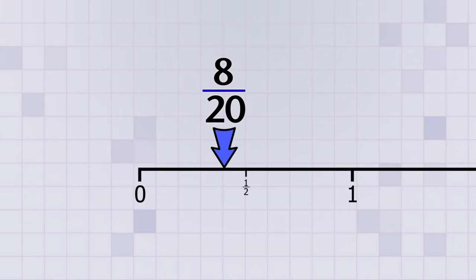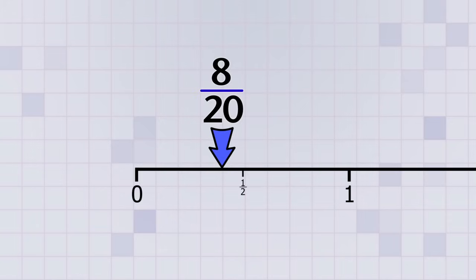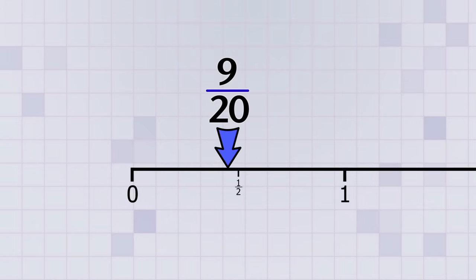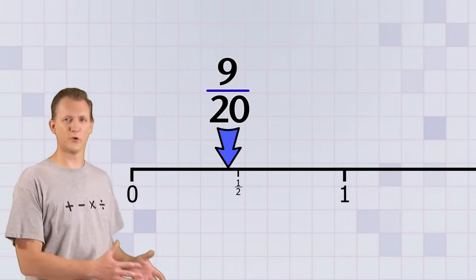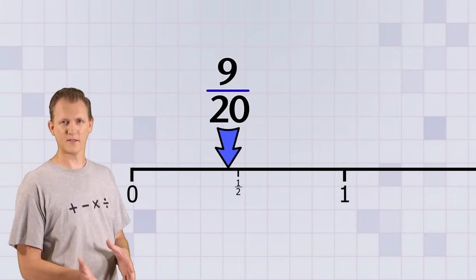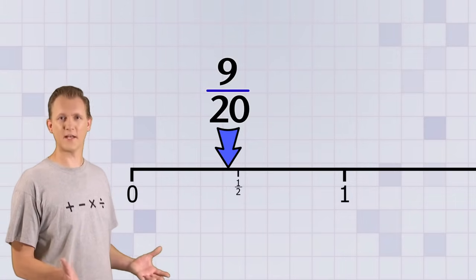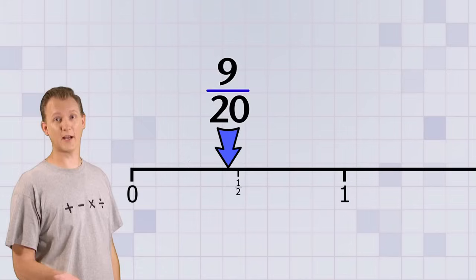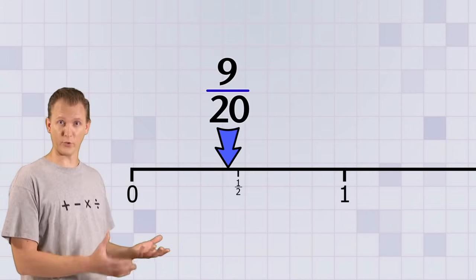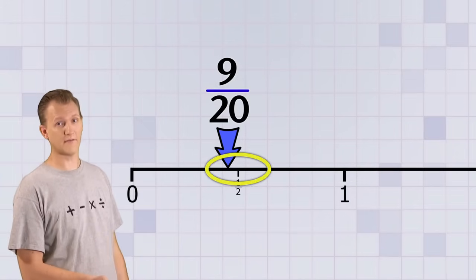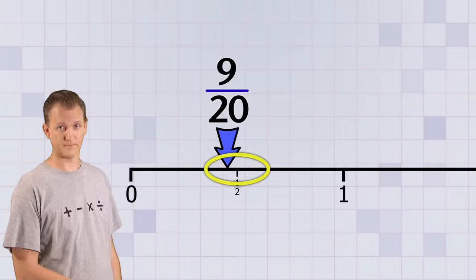We're almost to 10 on top, and since 10 is half of 20, we're almost to 1 half on the number line. It's pretty easy to figure out what half of something is, and we can use that to help us compare fractions — like we know that 9 over 20 is going to be really close to 1 half on our number line.